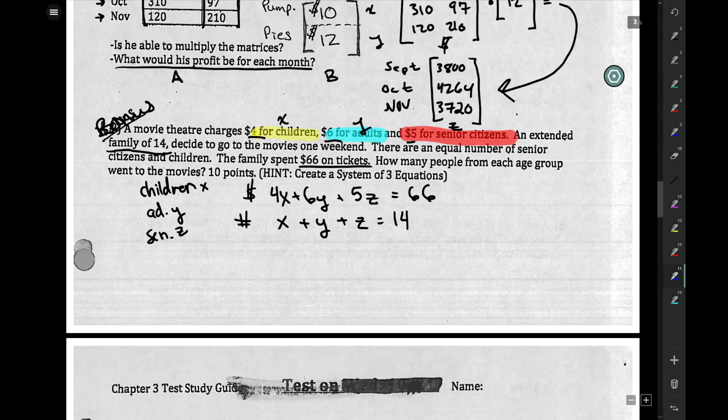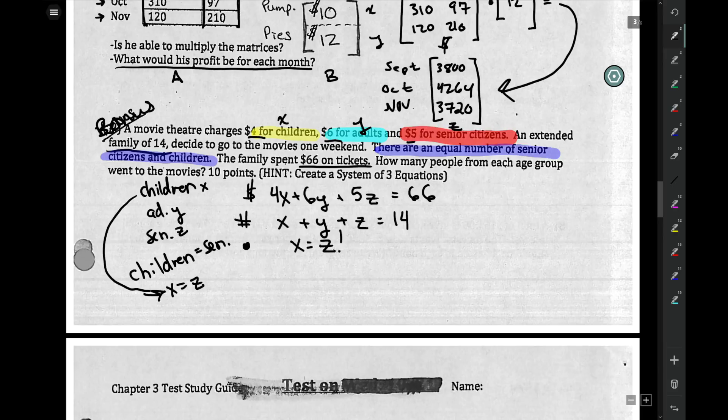Now the last bit comes from our extra information. They give you this extra little tidbit: there are an equal number of senior citizens and children. Well, if children are equal to seniors, that means x equals z. So your third bit, your little extra information, x equals z.